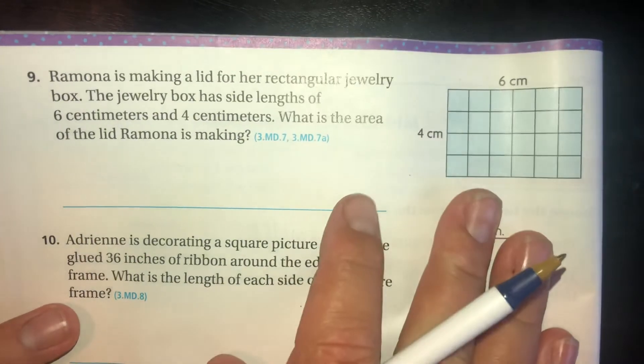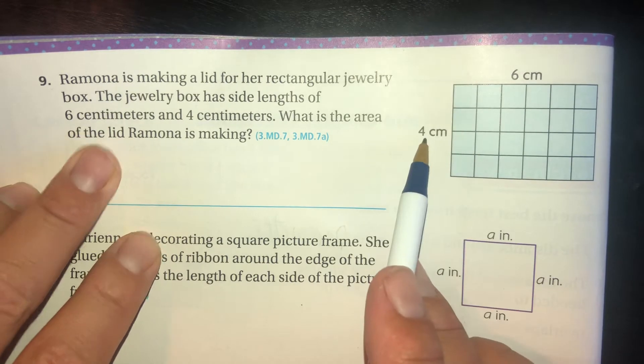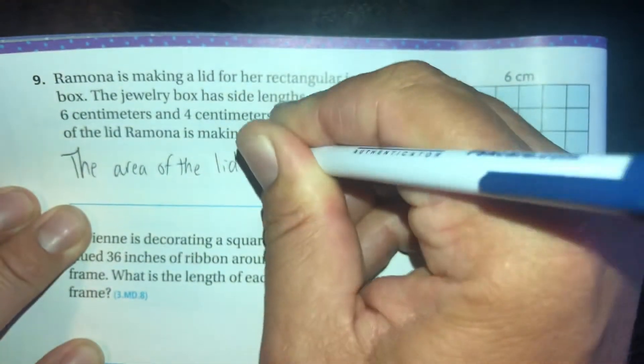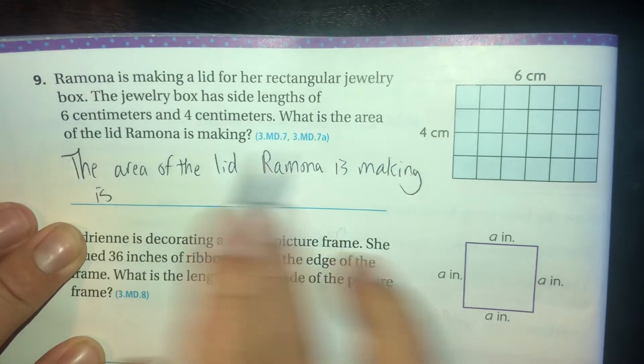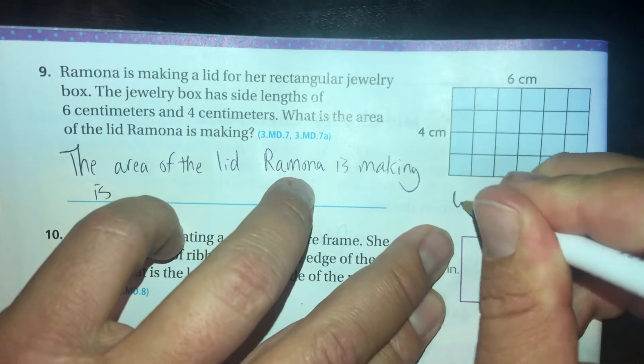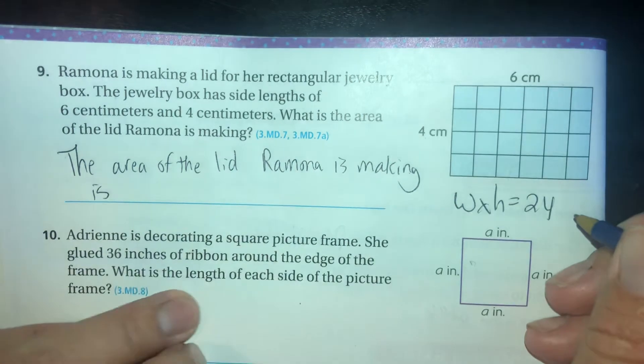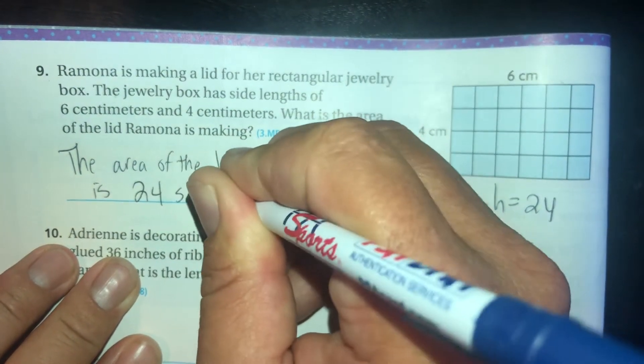Okay, we're on page 478 now. Ramona is making a lid for her rectangular jewelry box. The jewelry box has sides of 6 and 4 centimeters. What is the area of the lid Ramona is making? Okay, let's make sure we're using complete sentences here. The area of the lid Ramona is making is - it doesn't say explain, so I'm gonna use my width times height formula. So 6 times 4: 4 is the height, 6 is the width. The area is 24 square centimeters. The area of the lid Ramona is making is 24 square centimeters.